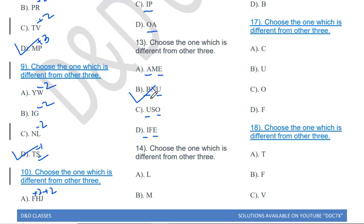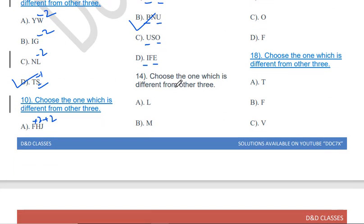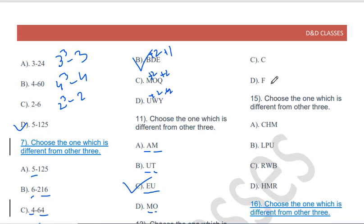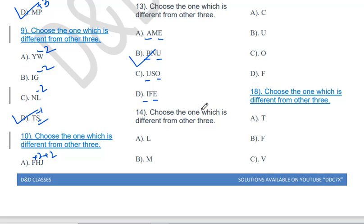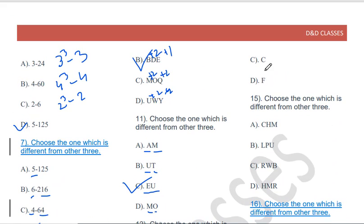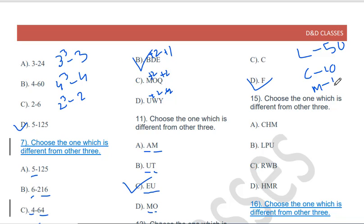Choose the one which is different from the other three: L, M, C, F. The answer is F, because L stands for 50, D is 500, C is 100, and M is 1000 in Roman numerals. But F has no definition in Roman numeral notation, so F is the odd one out.